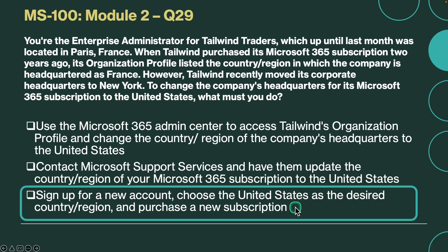The correct answer is sign up for a new account, choose the United States as the desired country and region, and purchase a new subscription. Because the country region where your organization is headquartered determines which services are available to you, the taxes, the billing currency, and the location of the Microsoft data center, changing the location of the company headquarters requires that you sign up for a new account, choose the desired country or region, and purchase a new subscription.